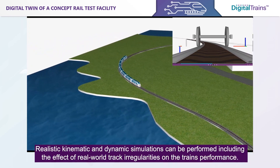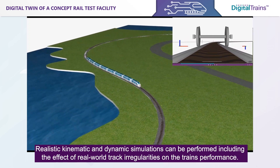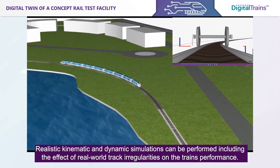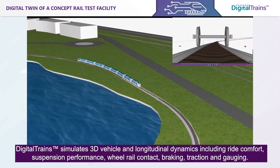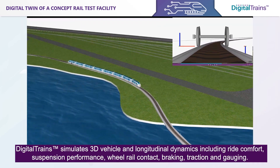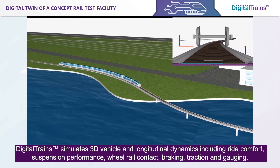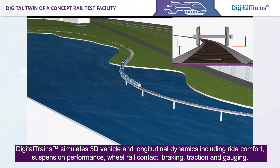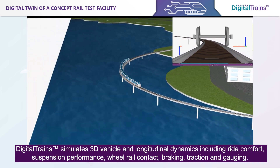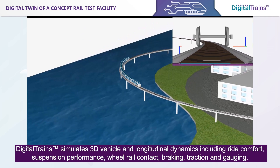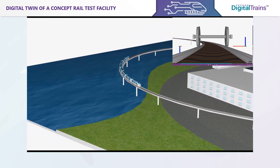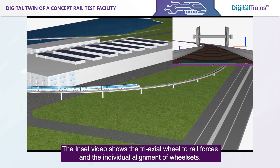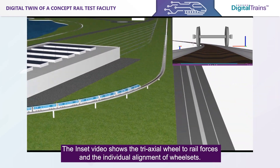Realistic kinematic and dynamic simulations can be performed, including the effect of real-world track irregularities on the train's performance. Digital Trains simulates 3D vehicle and longitudinal dynamics, including ride comfort, suspension performance, wheel-rail contact, braking, traction, and gauging. The inset video shows the triaxle wheel-to-rail forces and the individual alignment of wheel sets.